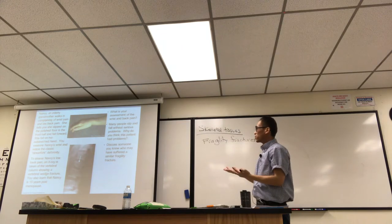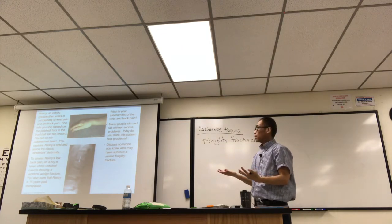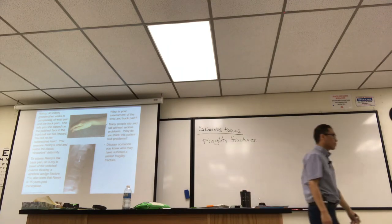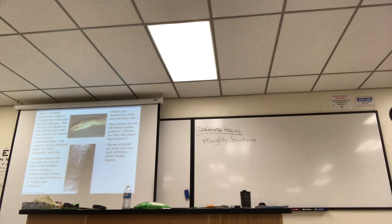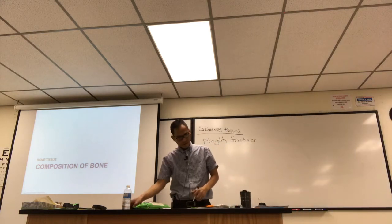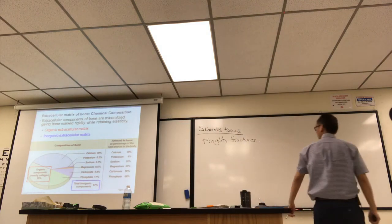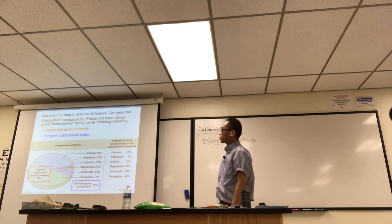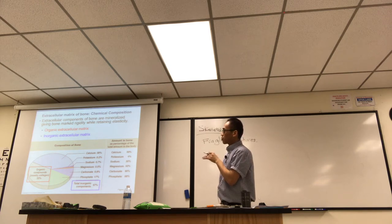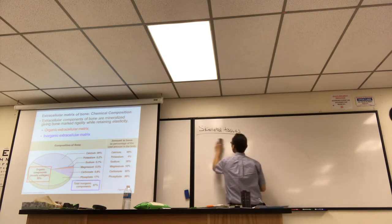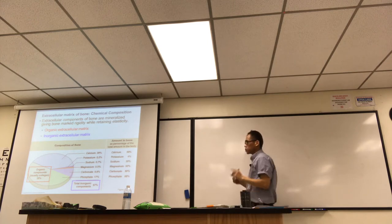To understand why bones would fracture easily in old people compared to someone in their 20s who may just fall and be okay, we have to learn about the composition of bone. The composition of bone is shown on this pie graph. The extracellular matrix of bone has a chemical composition that gives bone a mineralized quality, providing marked rigidity while retaining elasticity. This helps us understand why bones shouldn't break.